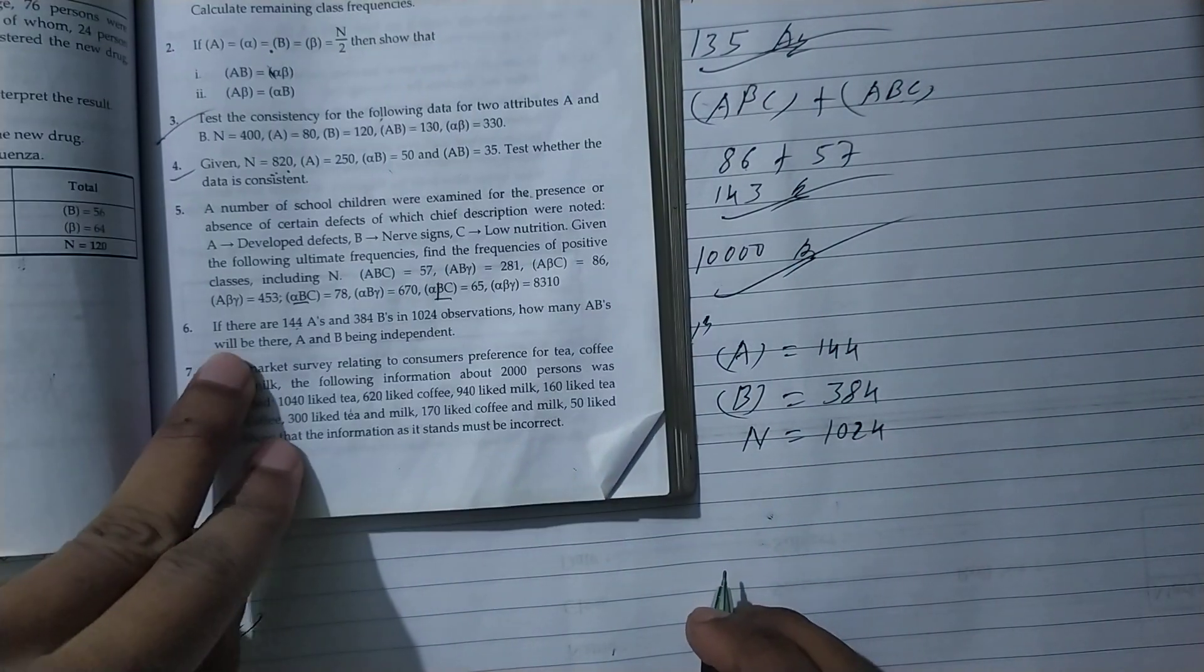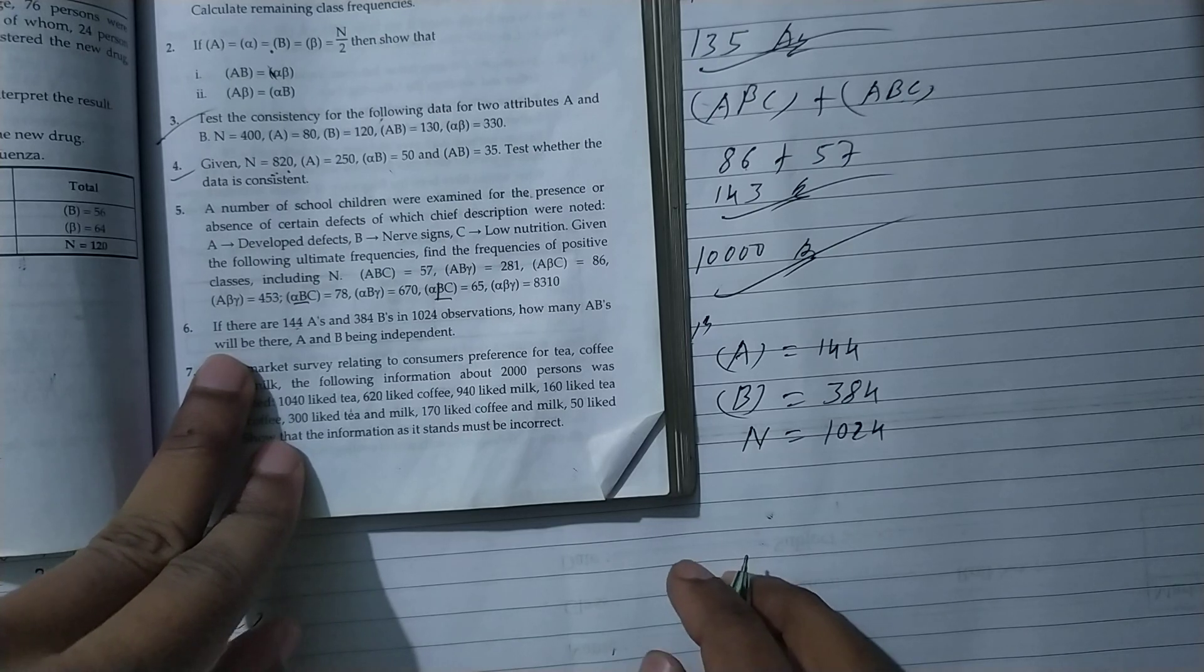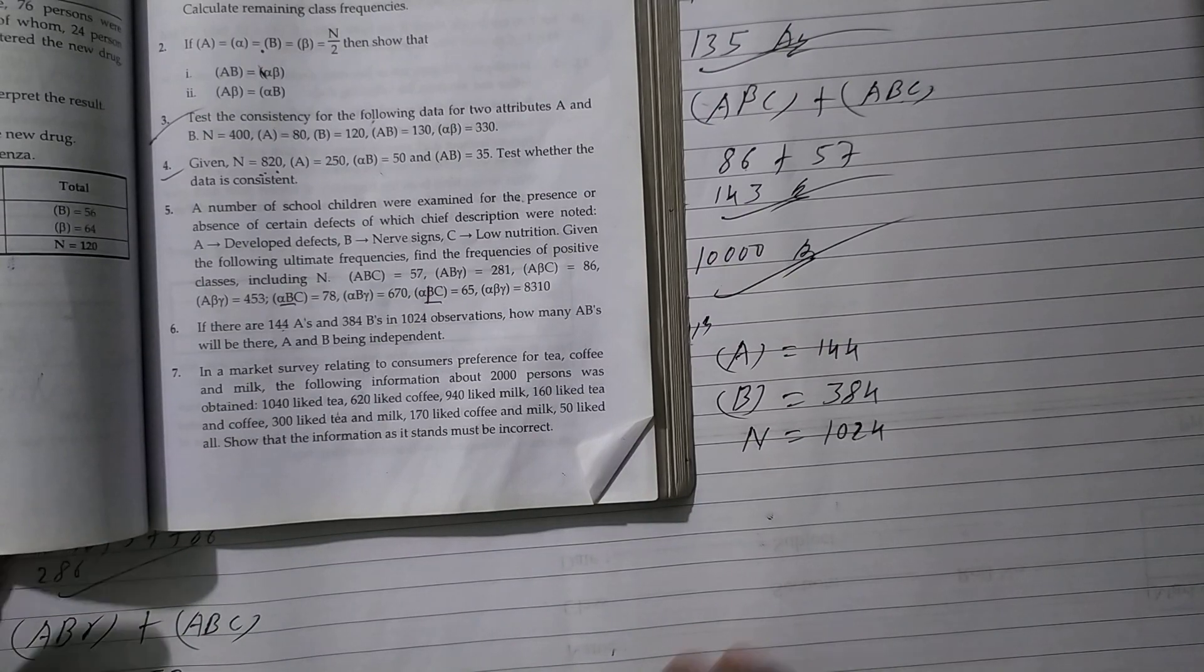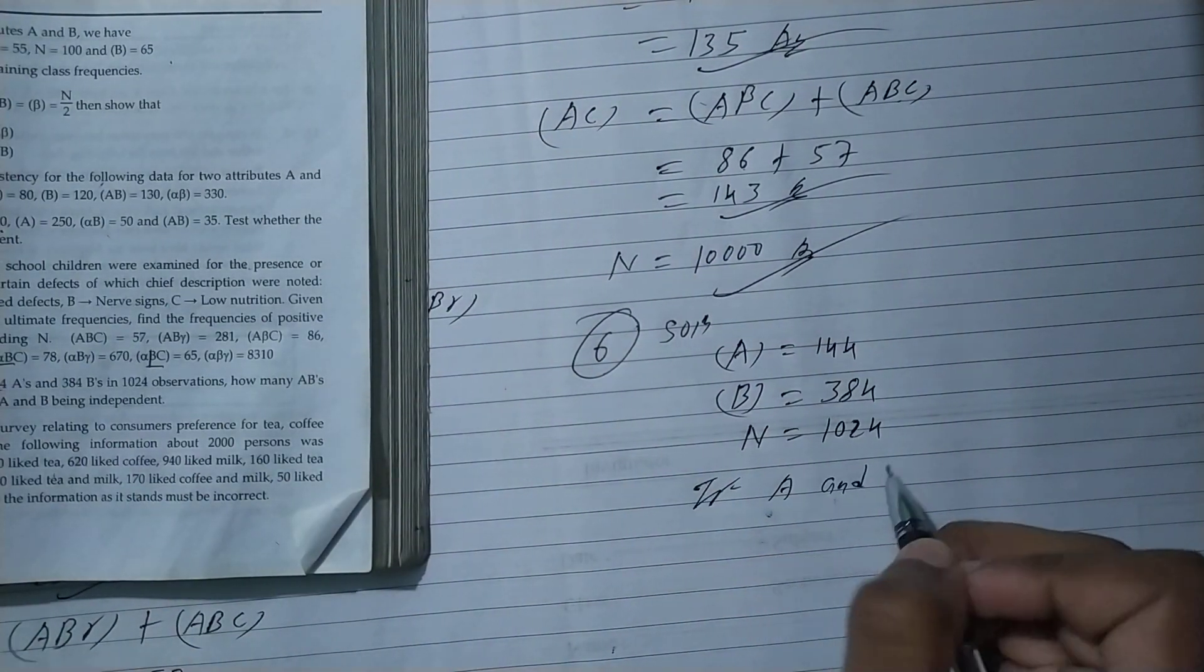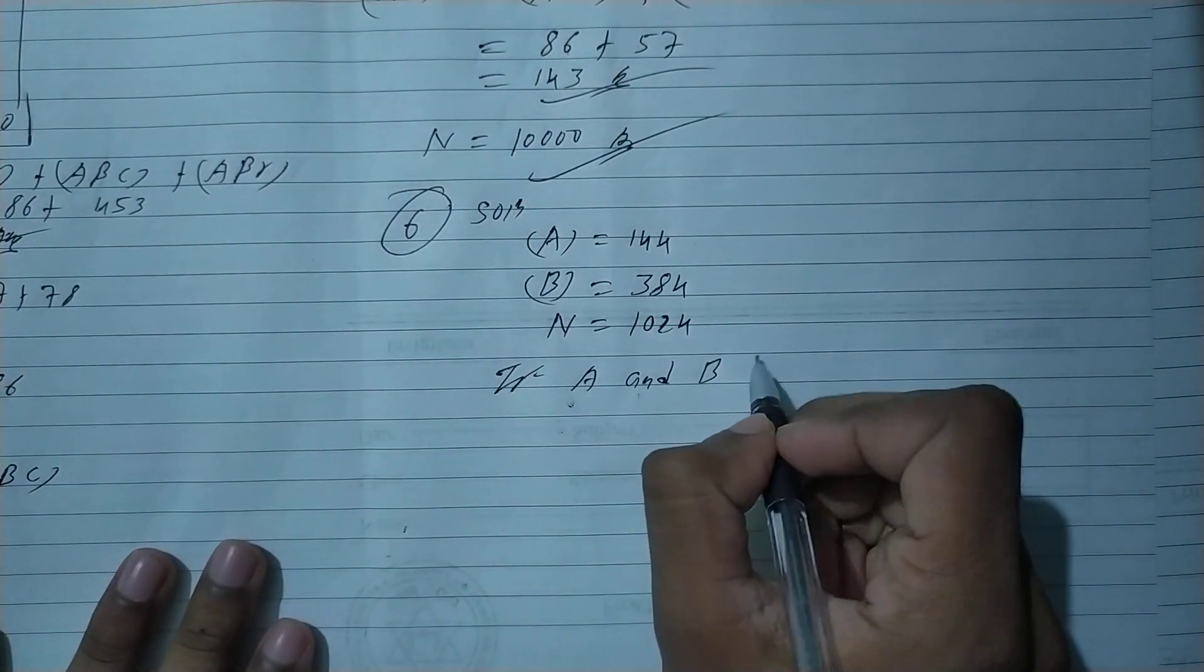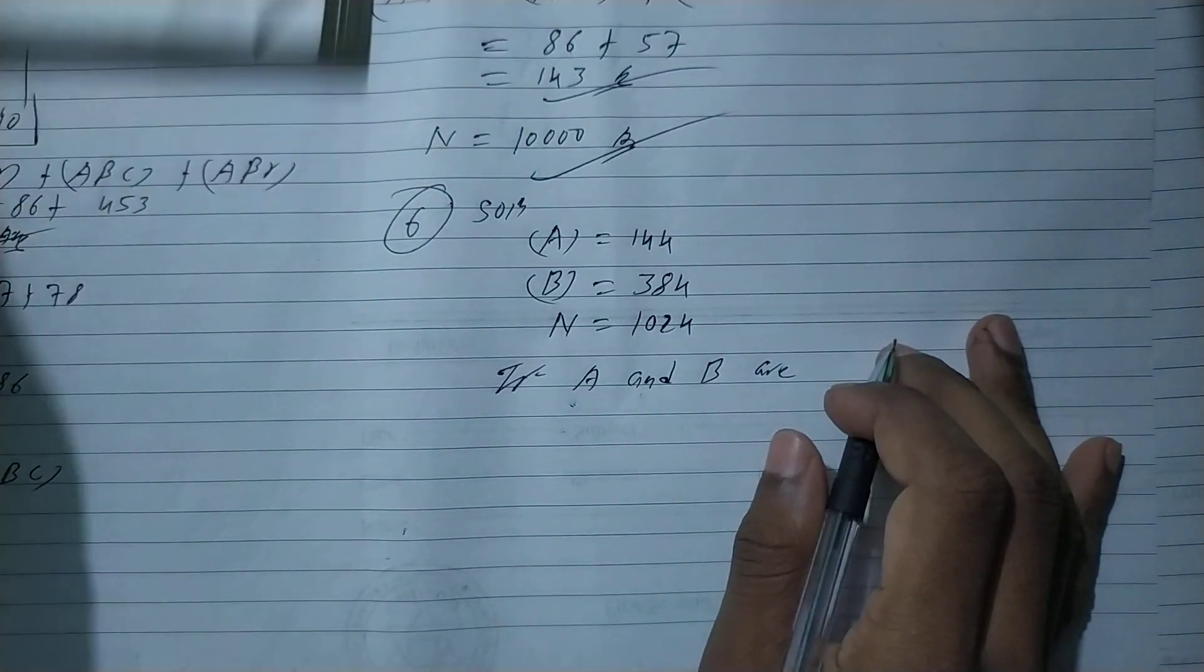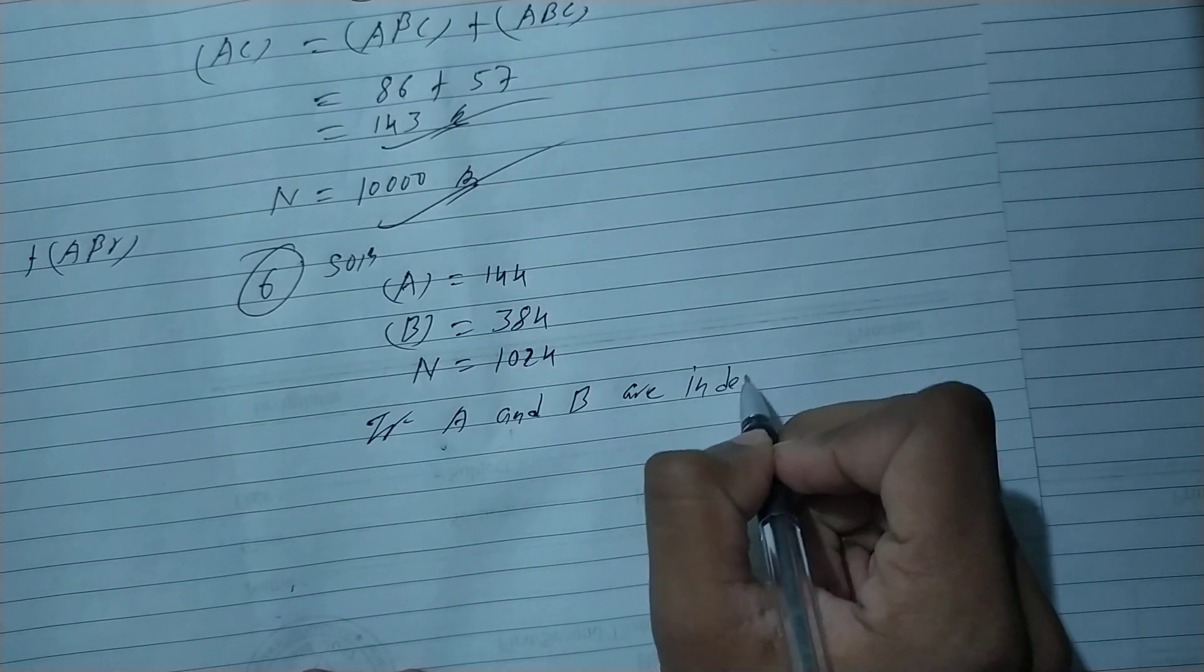How many A, B will be there if A and B being independent? So, if A and B are independent, are independent.